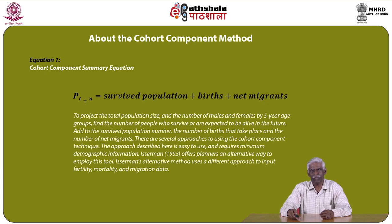To project the total population size and the number of males and females by 5-year age groups, we need to find the number of people who are expected to be alive in the future, and add to the survived population the number of births that take place and the number of net migrants.